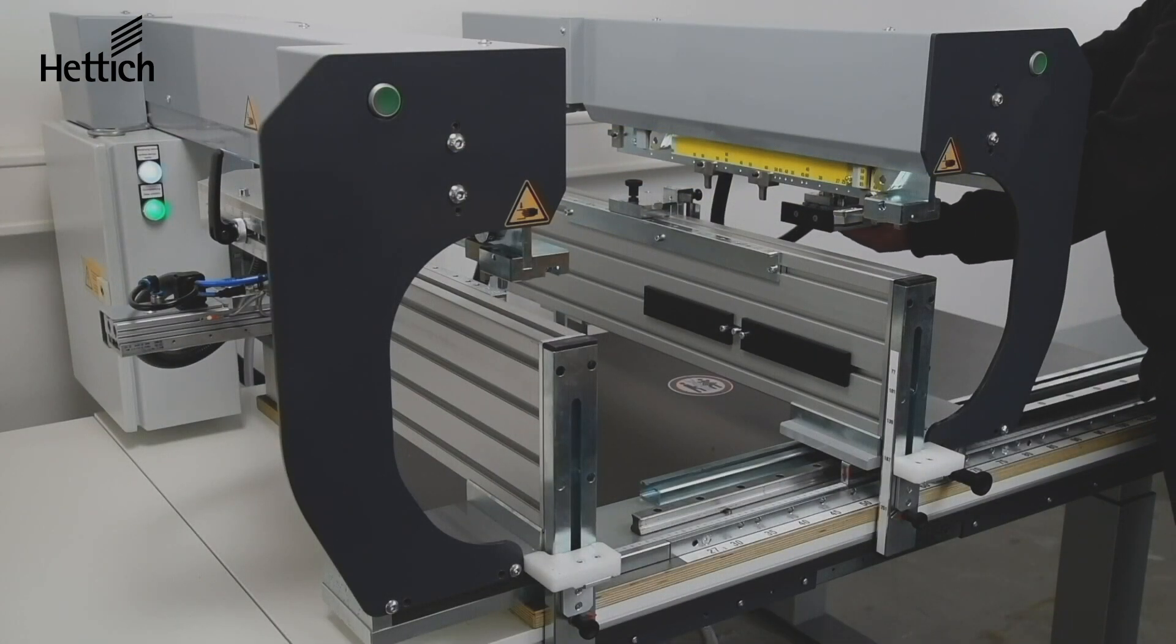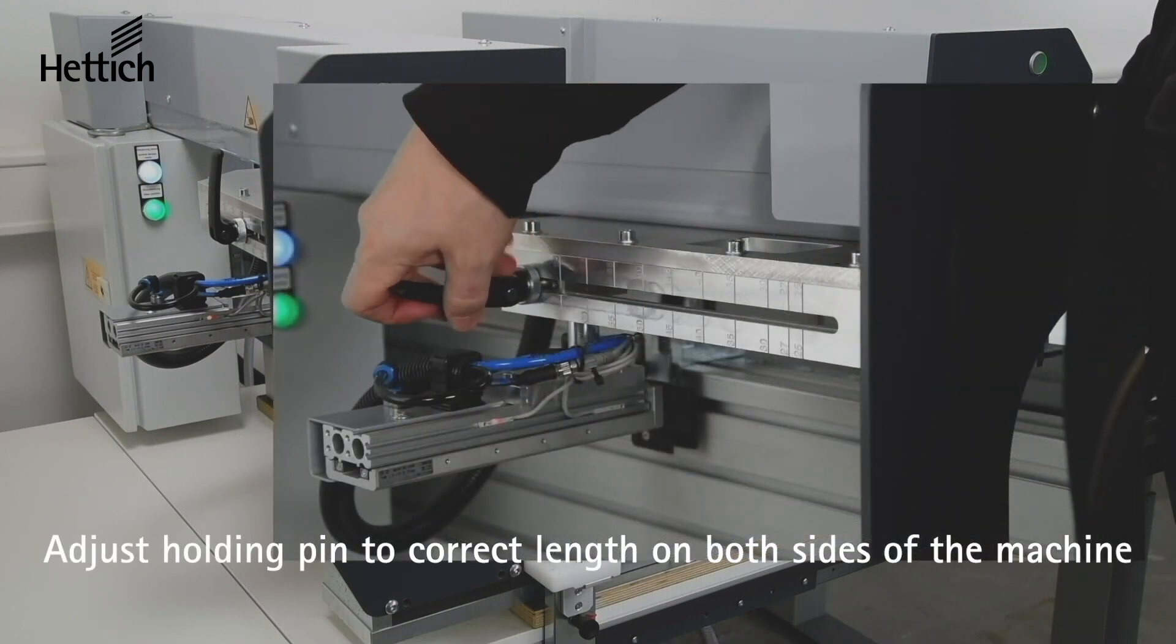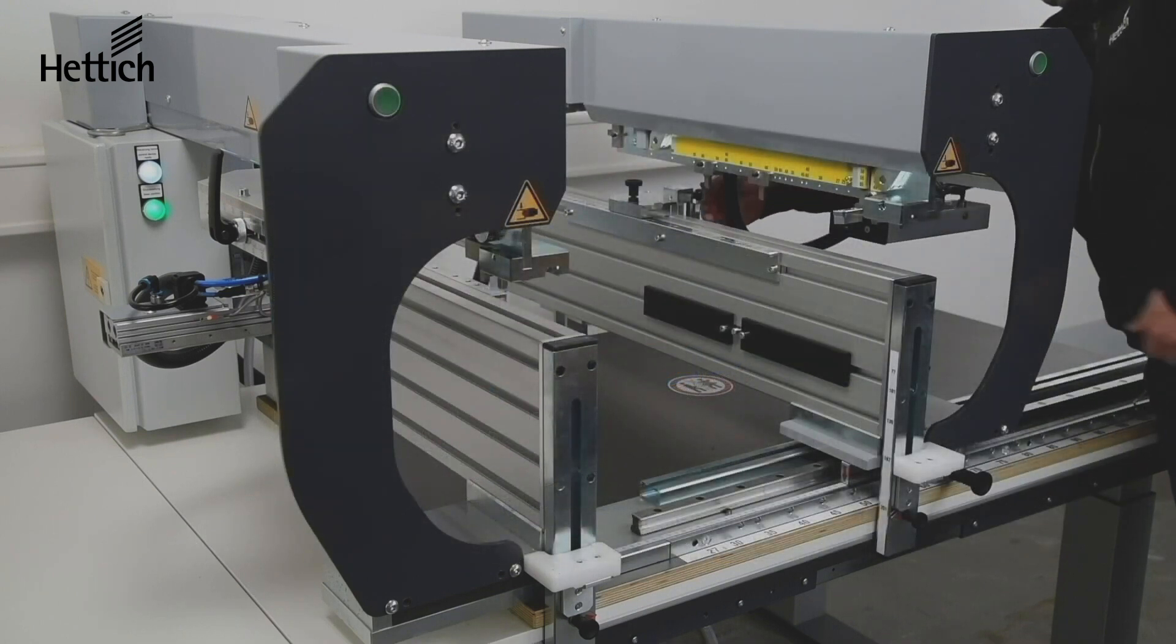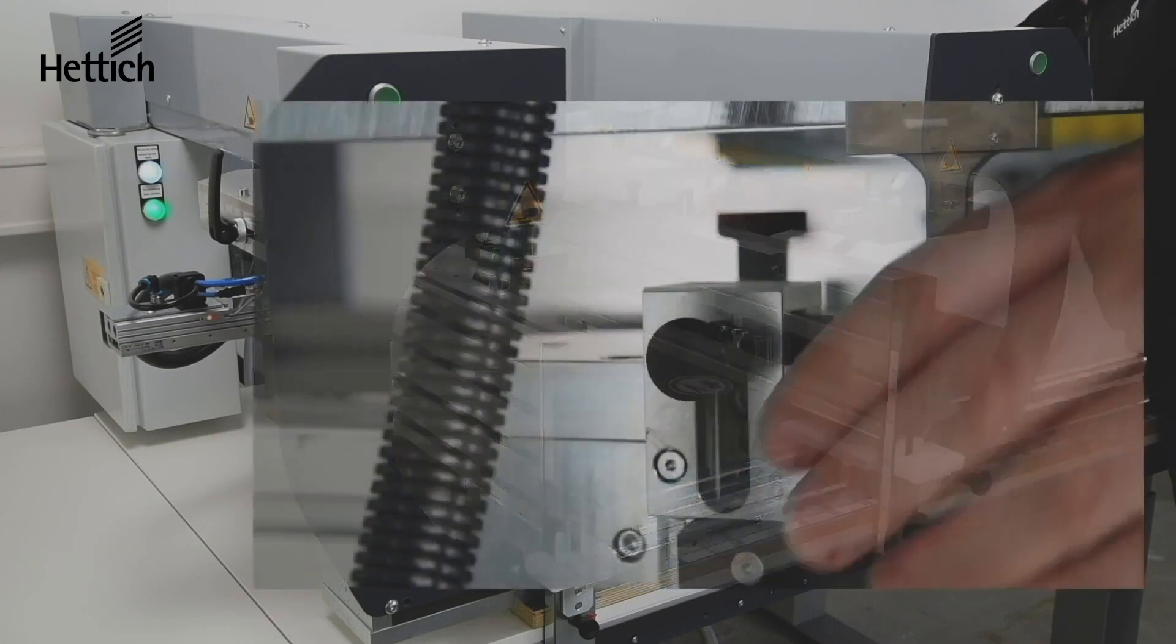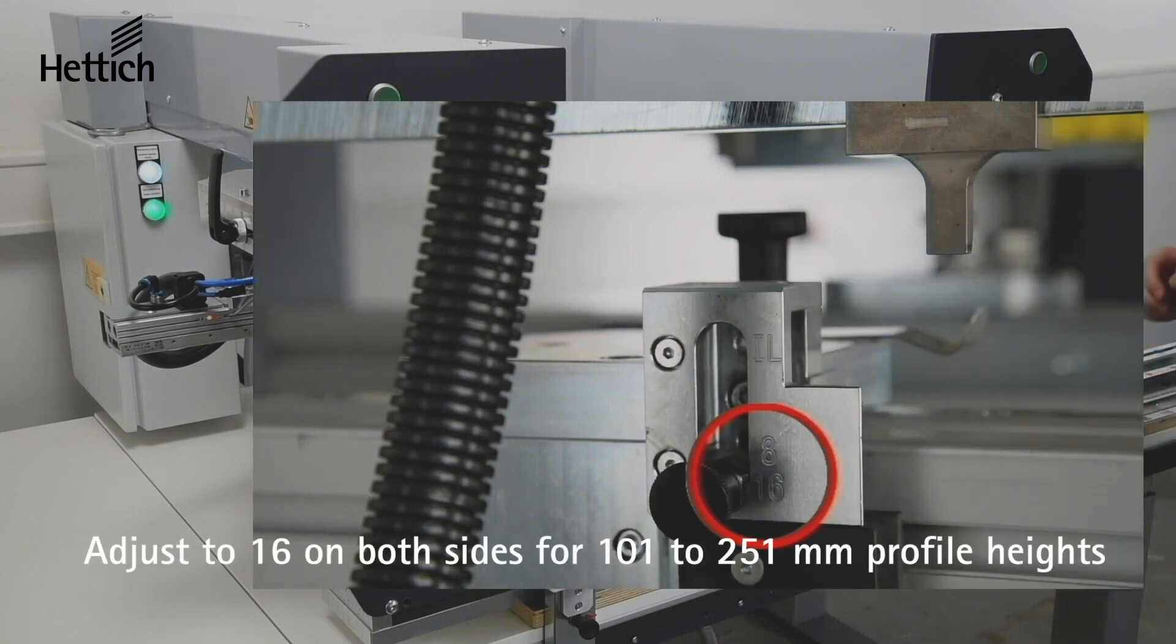Now adjust the holding pin to the correct length of the profile by turning the black handle and sliding it to the correct position that is clearly marked on the machine and lock it in place. Next pull out the black knob and slide it to the correct position. For profile heights of 101 to 251 millimeters, slide it to the bottom position labeled 16. This procedure must be done on both sides of the machine.